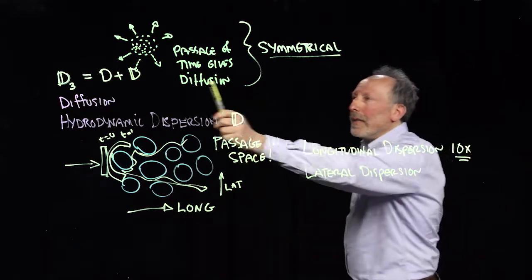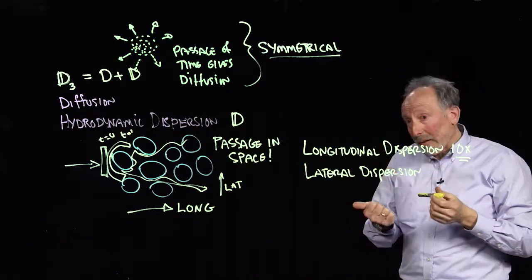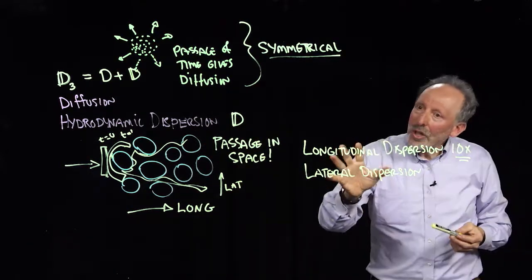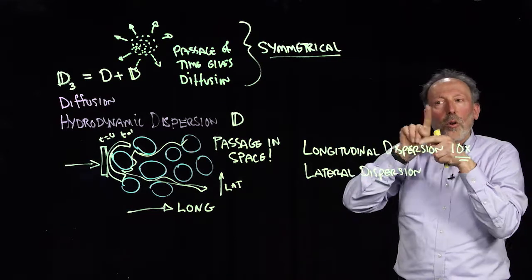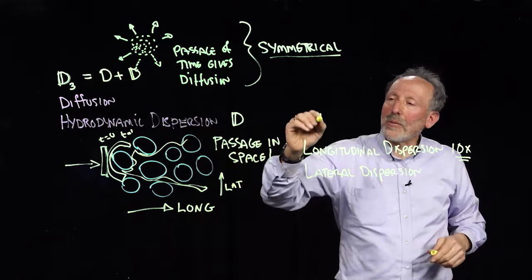While diffusion can be represented as a scalar, dispersion—you have to keep track of the fact that it has an orientation, has a directionality to it. And so really, it becomes what's called a tensor.